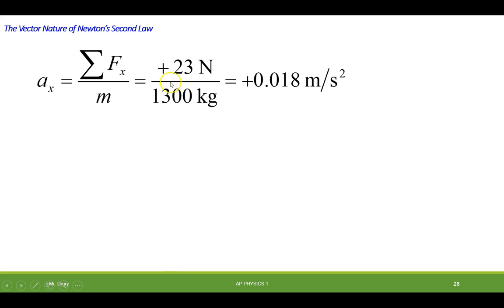So with that in mind, we can then figure out what the acceleration is in each direction. This would be 23 Newtons in the x direction divided by the mass of the raft, and this would give us the acceleration in the x. And we could do the same thing in the y direction.